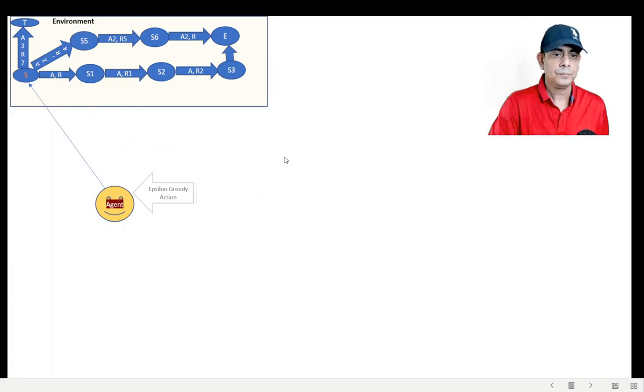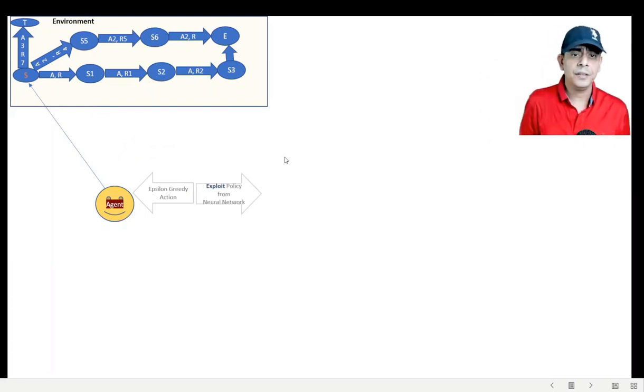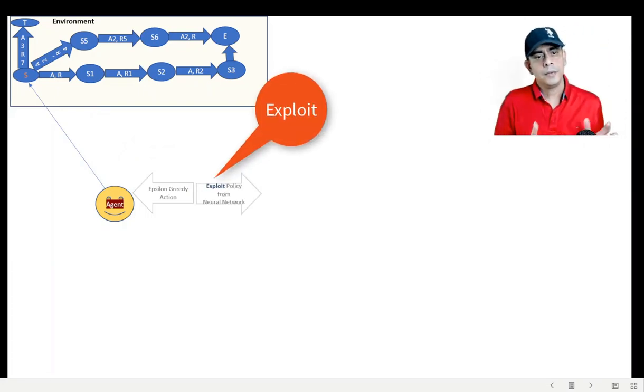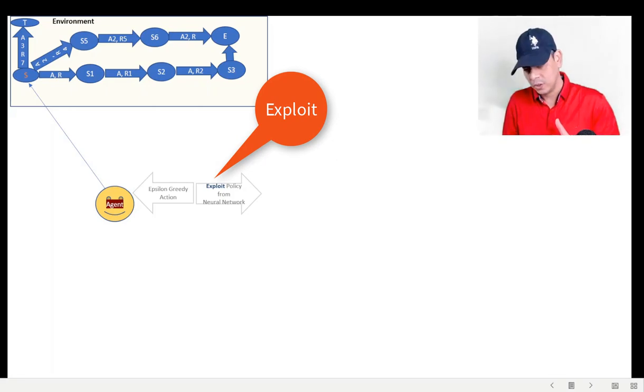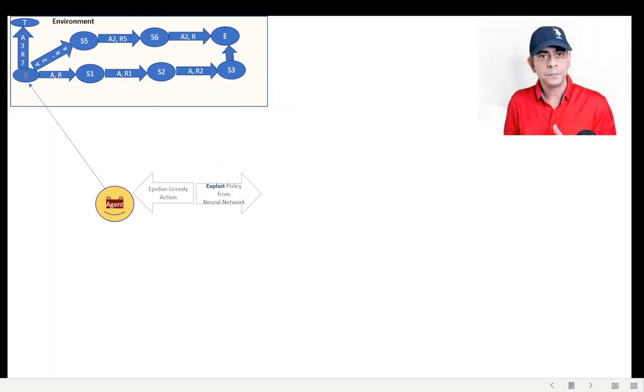But for finding the existing policy, typically the agent will go to his own lookup table, and from there for a particular state and action pair, he will see what is my calculated long-term reward, which is a Q-value.